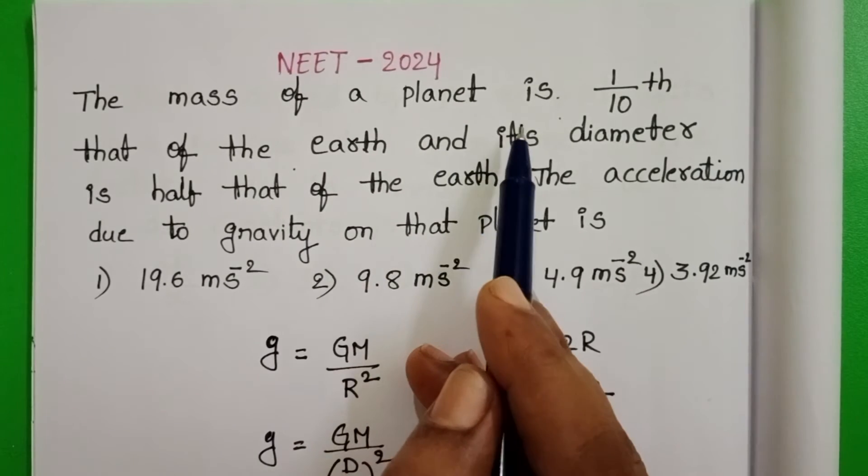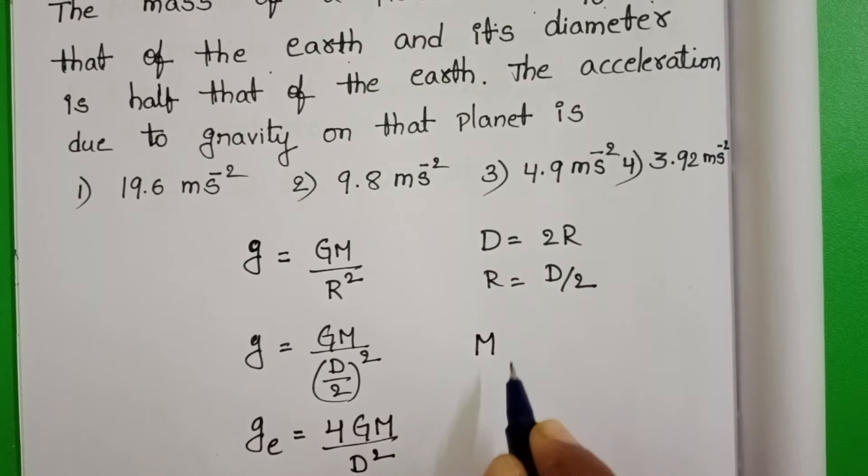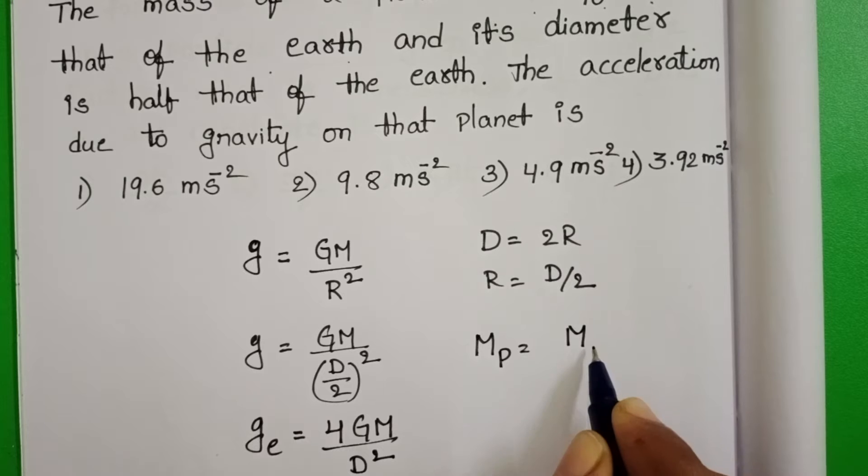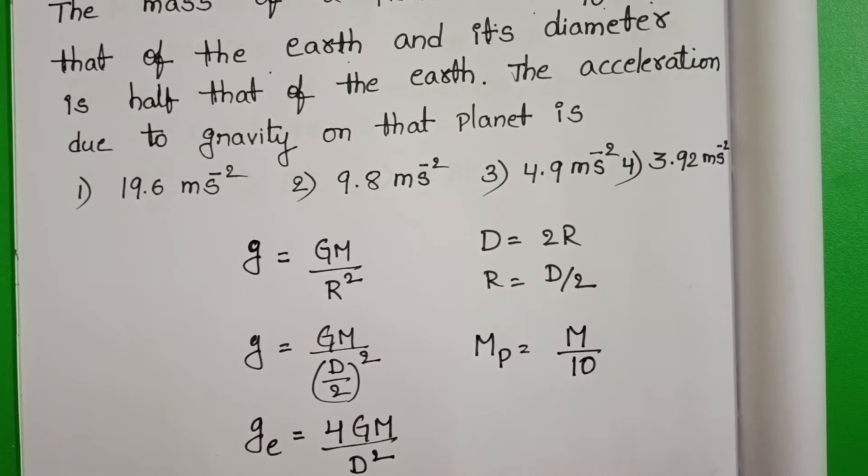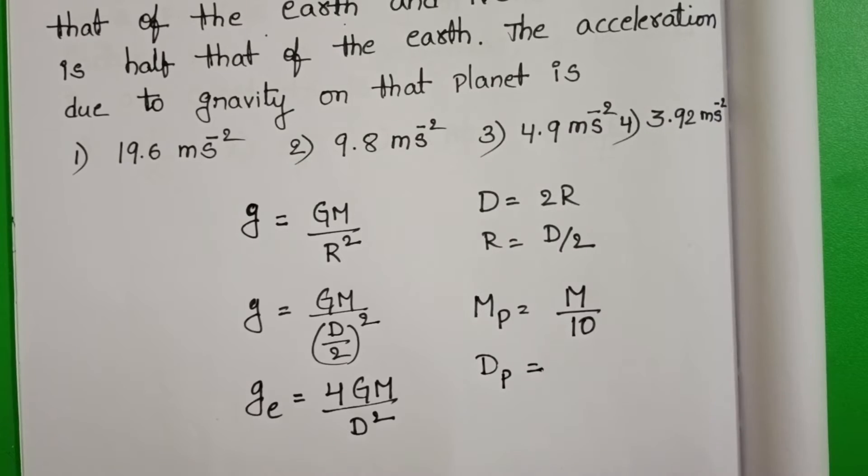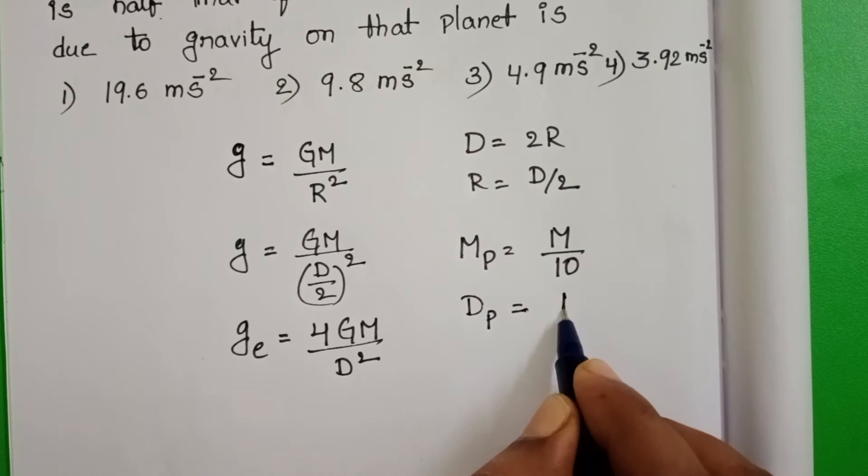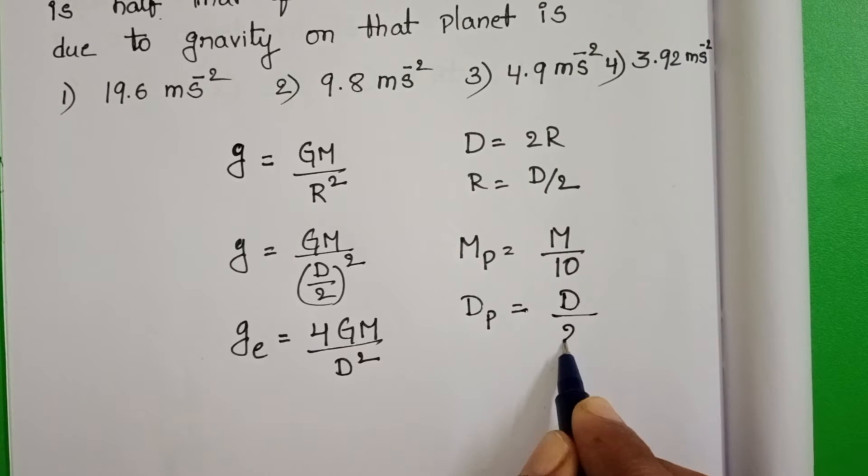Here mass of the given planet is 1 by 10th of the earth. Mass of the given planet, mass of the earth by 10th and diameter of the planet is equals to half that of the earth, D by 2.